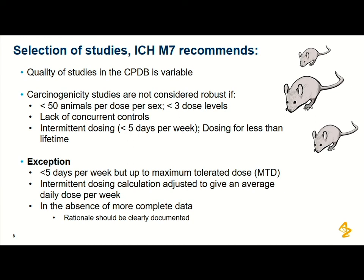Once you've done your literature review, the next step is evaluating carcinogenicity data. There isn't an easy way around this — you have to become carcinogenicity study experts. You need to go into the detail of the study, understand its robustness, and determine if it's suitable for calculating exposure limits. The quality of studies in the carcinogenicity potency database is variable. The CPDB uses duration of dosing across a lifetime as essentially its only inclusion criterion.